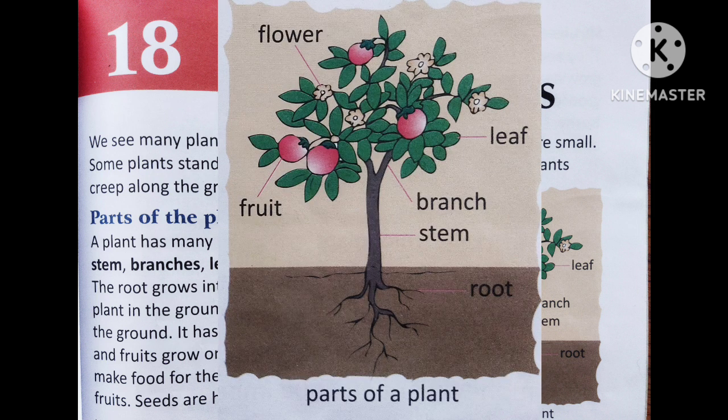That is a brief overview of the different parts of the plant. A plant has roots, stem, branches, and leaves — all marked here. The lower part, which is brown in color, is the soil. The roots grow inside the soil into the ground and help the plant to stand straight, fixing it in place.